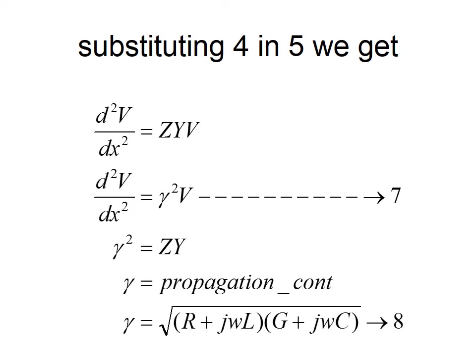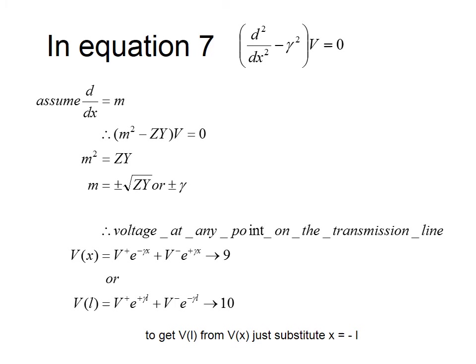The propagation constant γ is the square root of the product Z·Y, which equals √((R + jωL)(G + jωC)). The propagation constant describes how a voltage or current wave, as it propagates along the transmission line from source to load, gets attenuated in magnitude and delayed in phase. Equation 7 is written as d²V/dx² − γ²V = 0.